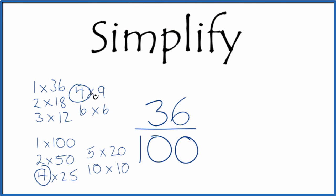So 36 divided by 4, that equals 9. And then 100 divided by 4, that equals 25. And we end up with 9/25,